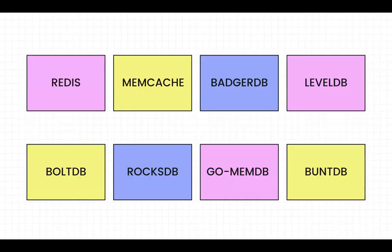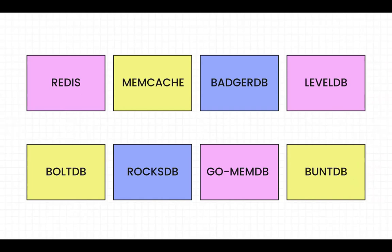One important feature is that though it's a key-value database, some databases support different kinds of values. A few examples of common databases: Redis, Memcache, BadgerDB, LevelDB by Google, BoltDB also by Google, RocksDB currently managed by Facebook. HashiCorp has a good in-memory database based on immutable radix trees called go-memdb, and George Baker has an interesting database called TileDB for geospatial queries.